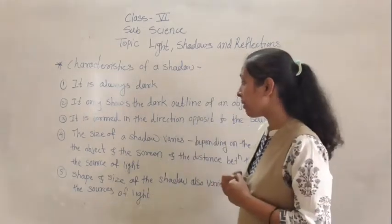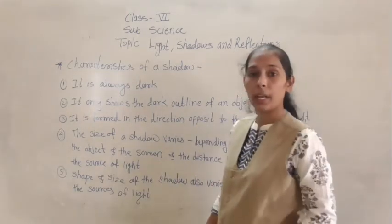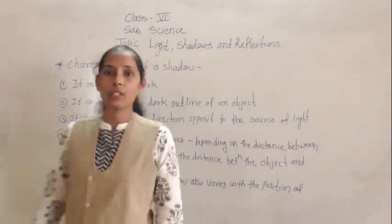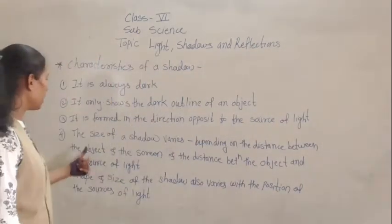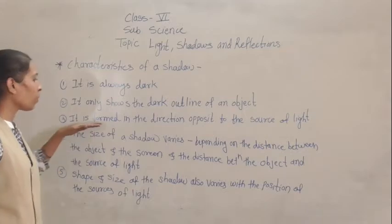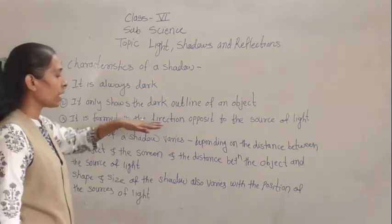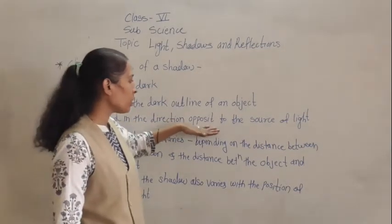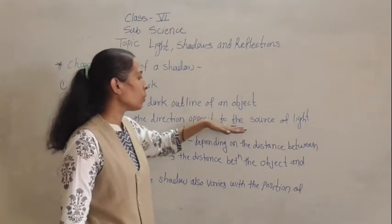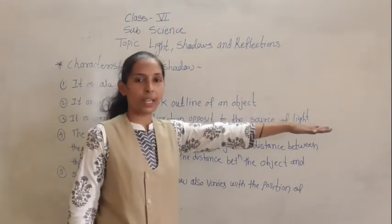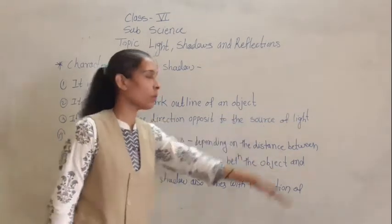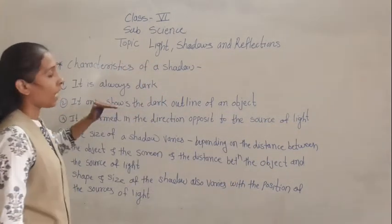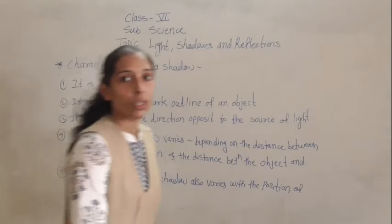The next characteristic is that the shadow is formed in the direction opposite to the source of light — opposite to the source of light.